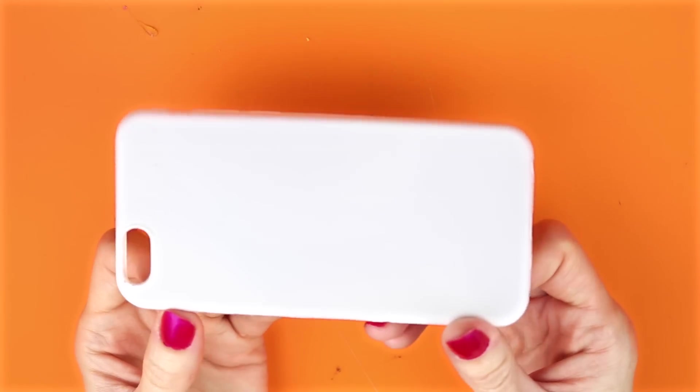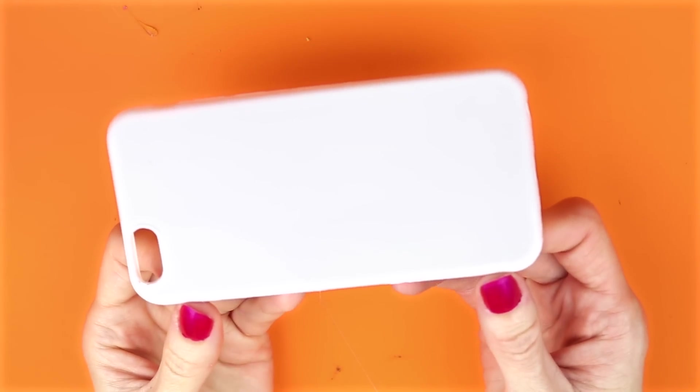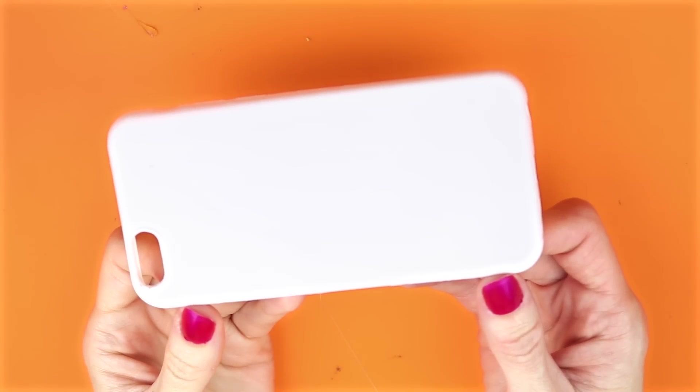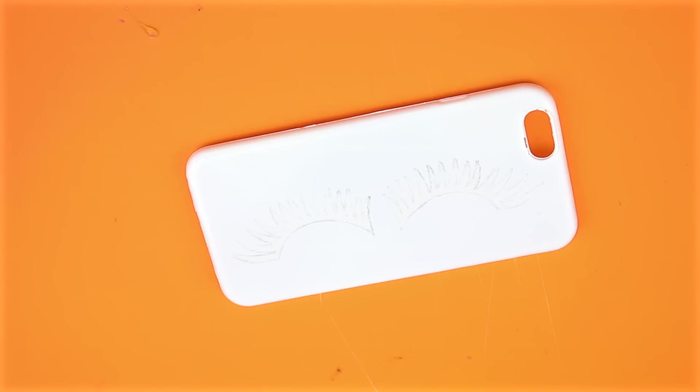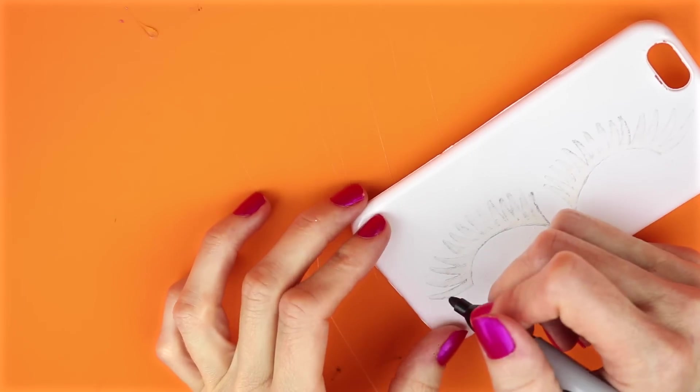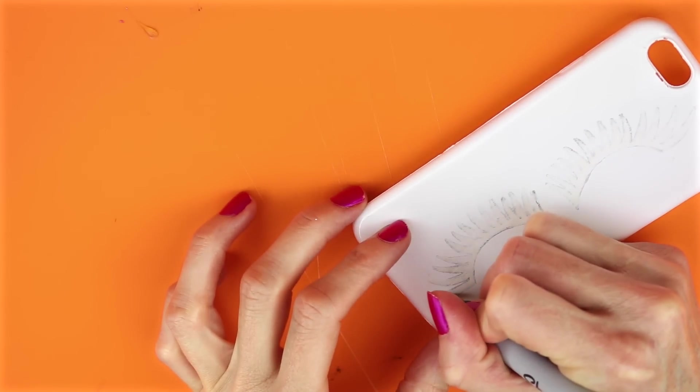Here is mine after a couple coats of white paint. Next thing I did was I just drew on some eyelashes. I just used a Sharpie to color the eyelashes in.